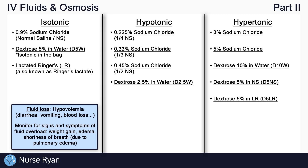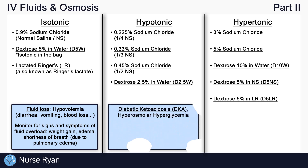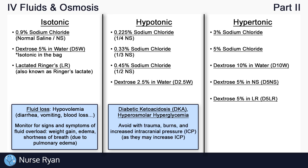Hypotonic solutions — hypo grow — cause the cells to grow. So why would we want the cells to grow? Hypotonic solutions are used when the cell is dehydrated and fluids need to be pushed back intracellularly. This happens when patients develop diabetic ketoacidosis (DKA) or hyperosmolar hyperglycemia. We want to avoid hypotonic solutions in those with trauma or burns due to the risk of third spacing. Hypotonic solutions have also been shown to increase intracranial pressure, so we want to avoid them in those who already have increased intracranial pressure.